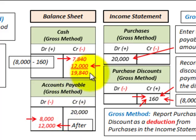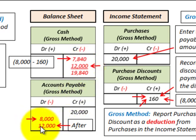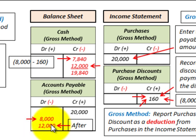For the final $12,000 payment with the gross method, we simply credit cash for $12,000 and debit accounts payable for $12,000. We don't record any purchase discount here because this payment was made outside the discount period. That's how you record both payments using the gross method.